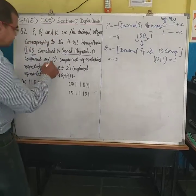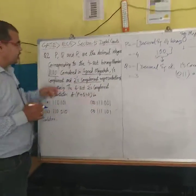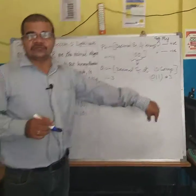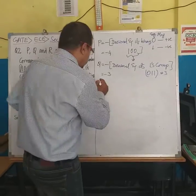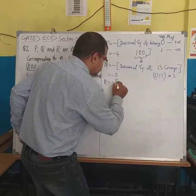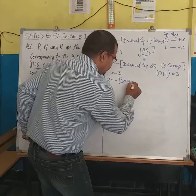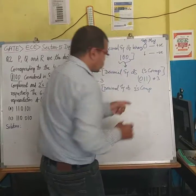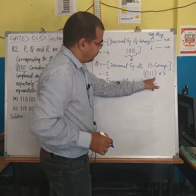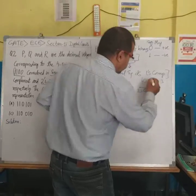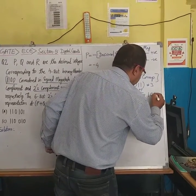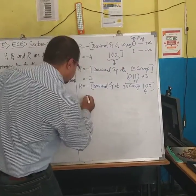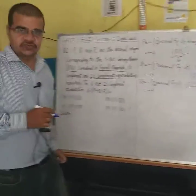R is the decimal integer in 2's complement representation. 2's complement means 1's complement plus 1. The 1's complement of the magnitude bits 100 is 011, and adding 1 gives 100, which is 4. Since the sign bit is 1, R is minus 4.